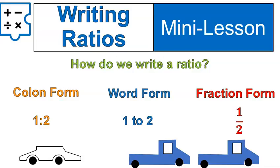Fraction form is just putting the first number in the numerator and the second number in the denominator. Our fraction form here would also be read one to two. We could say it's one half, but typically if we're reading it as a ratio, we would read it the same way. This is one to two.